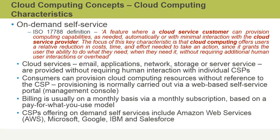The next characteristic is on-demand self-service. This means that cloud service customers can provision additional computing capabilities as needed. For example, in the case of using email in the cloud, an organization could very quickly provision new email accounts for new employees that get hired, without worrying about ordering a server or acquiring additional licenses. Another key aspect of on-demand self-service is that consumers can provision the resources they need — whether it be email, storage space, virtual machine instances, database instances, and so on — without first going through the cloud service provider.